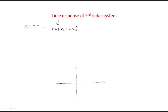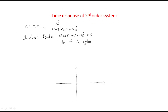From this transfer function we will write the characteristic equation. The characteristic equation is nothing but the denominator set equal to zero. The denominator here is s squared plus 2 zeta omega n s plus omega n squared equals zero. This equation will give us the poles of the system. Since it is a second order system, it has two poles.